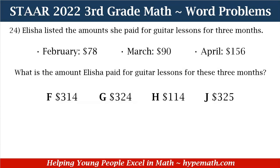Let's dive into our first word problem. Number 24 says: Alicia listed the amounts she paid for guitar lessons for three months. For February, she paid $78; March, $90; and for April, $156. What is the amount Alicia paid for guitar lessons for these three months? Was it F, $314; G, $324; H, $114; or J, $325?